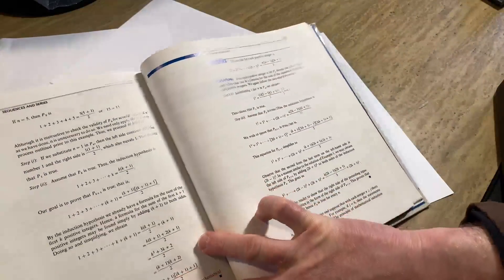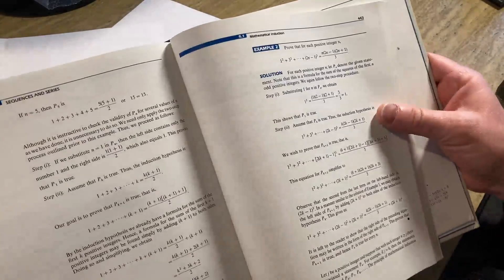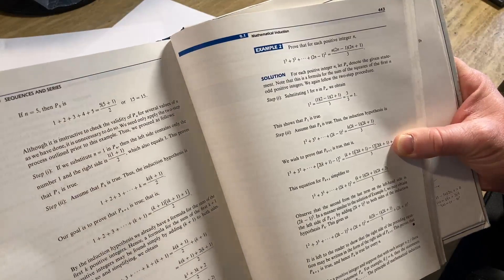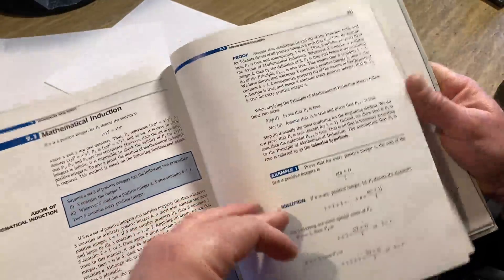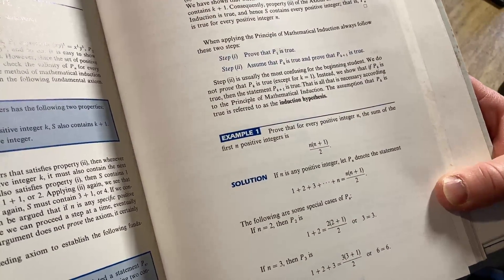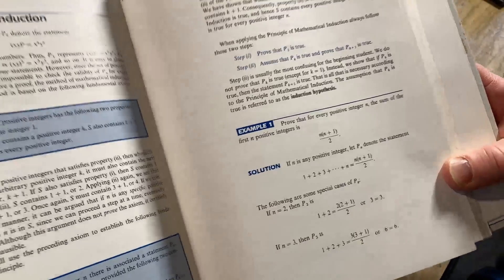You could certainly do that. I think the reason they start with, oh, no, they're just checking it. They're just checking it. They're just observing. Here are some following, the following are some special cases of P sub n. So if n is two, they just check it. They finish through, they check it.